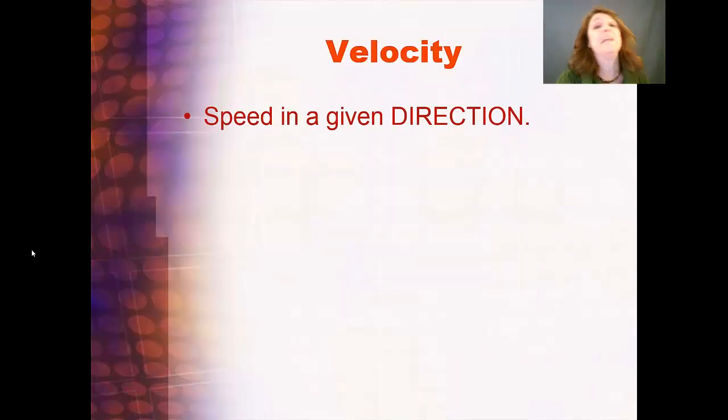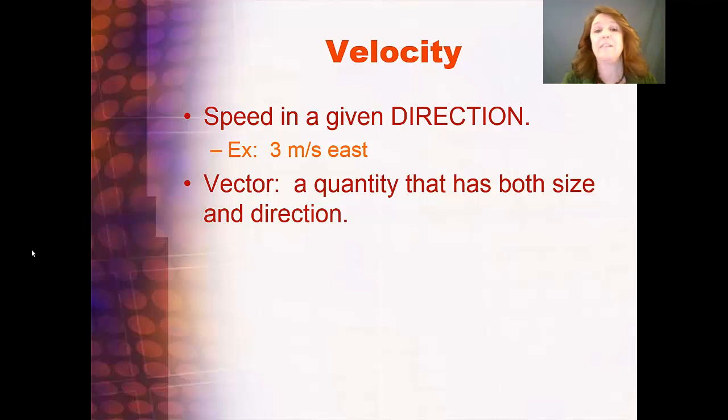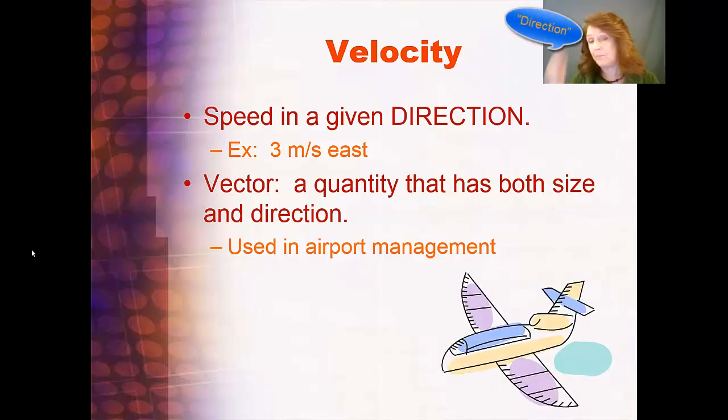Now velocity is speed in a given direction. A lot of people use speed and velocity interchangeably, but really there's one very significant difference - velocity contains a vector. It's a quantity that has both size and direction. So you're not just going three miles per second, you're going three miles per second east. You've got a speed and a direction. Put those together, and that gives you a velocity or a vector. Vectors are used in airport management, and in almost any traffic management, because both the speed and the direction are really important.